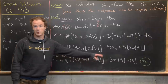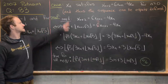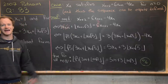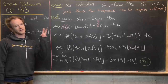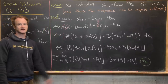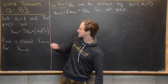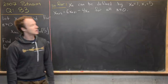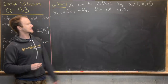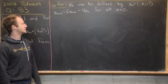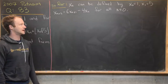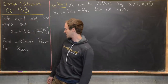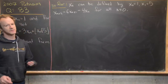By our homework exercise, the sequence satisfies the two-step recursion, which means we can redefine it using the two-step recursion with two initial conditions instead of one. So: x₀ = 1, x₁ = 5, and xₙ₊₂ = 6xₙ₊₁ − 4xₙ for all n ≥ 0. Now we're going to find a closed form for xₙ — and thus x₂₀₀₇ — using generating functions. There are several approaches; this is just the way I like to do it.